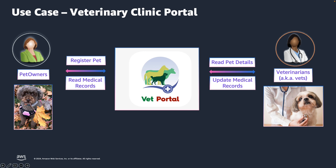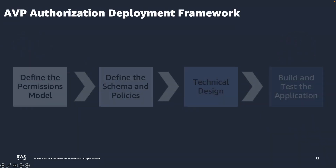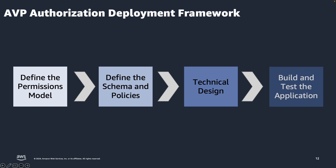Let's take a look at the authorization framework. This is the Amazon Verified Permissions recommended framework to build authorization for applications. The authorization model is a narrative that describes the permissions within the application. It is typically built in conjunction with the business owner of the application. It involves four steps: define the permissions model for the application; define the schema and policies; define the processes; create the technical design; and build and test the application. In this video, we will be discussing the first step — define the permissions model.